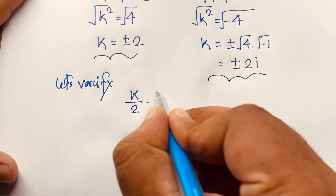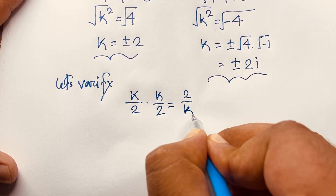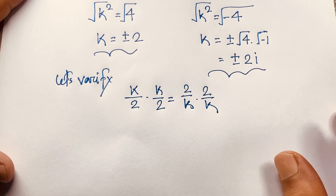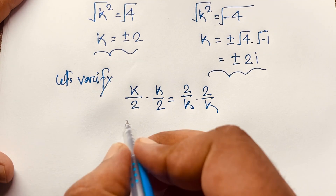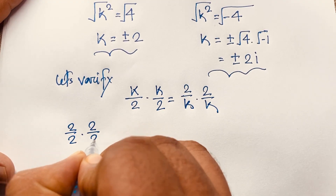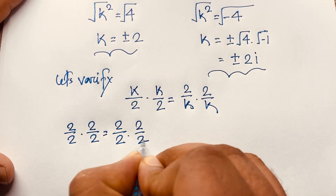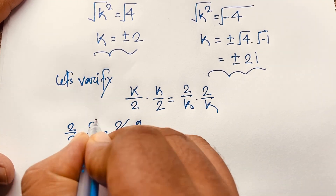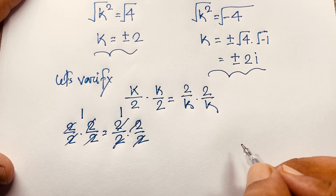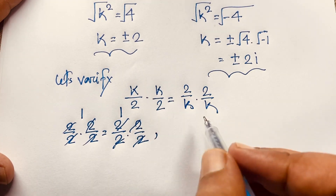Let's verify. Our equation is k over 2 times k over 2 equals 2 over k times 2 over k. For k equals 2: 2 over 2 times 2 over 2 equals 2 over 2 times 2 over 2. These cancel out giving 1 equals 1. Left hand side equals right hand side, so k equals 2 is verified.